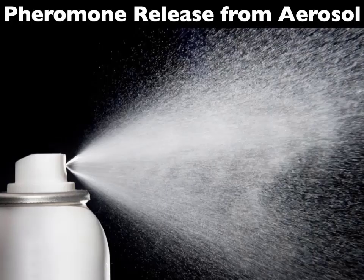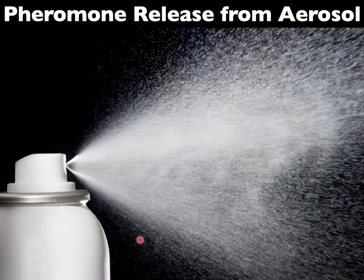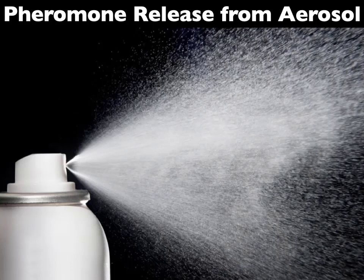How does pheromone get released from an aerosol and cover such an area? Pheromone is mixed with a solvent, placed into a can, and a gas propellant is injected. These propellant gases have very low boiling points — some around minus 15 degrees Fahrenheit. Every time an emission is released, you get a blast of propellant, pheromone, and solvent into the air. Like an explosion, it breaks the pheromone and solvents into very small particles — 30 to 120 microns in size — which, just like spray drift, can move a long distance.